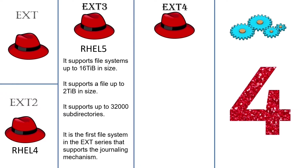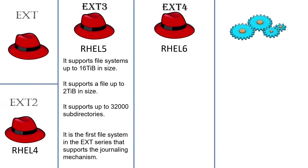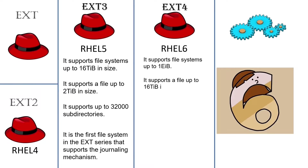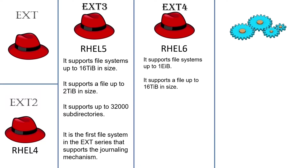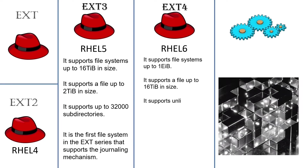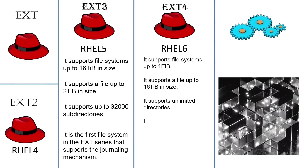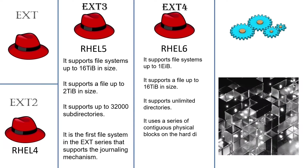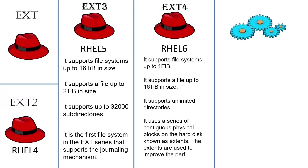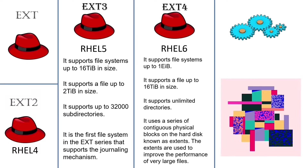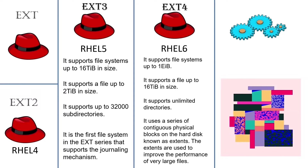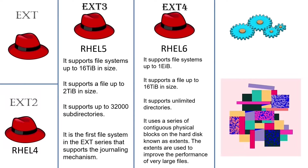ext4 is the fourth generation of the ext file system and was the default file system in RHEL 6. It uses a series of contiguous physical blocks on the hard disk known as extents. The extents are used to improve the performance of very large files.